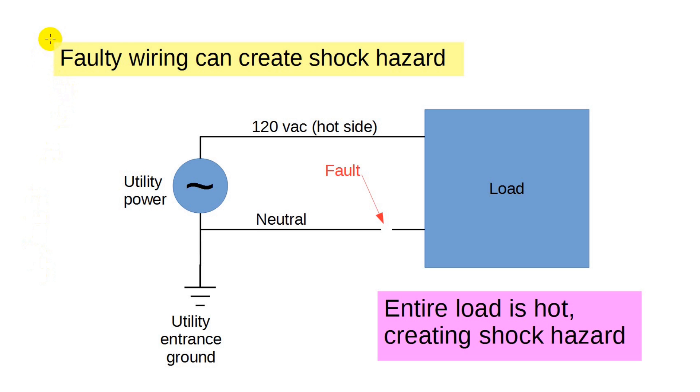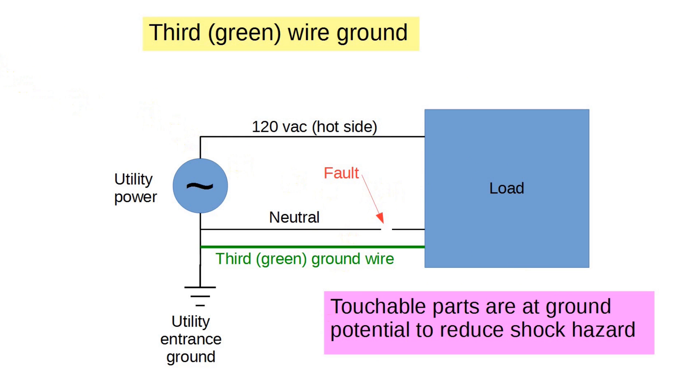Let's look at how a simple wiring fault can lead to issues. If there is a fault, here meaning an open circuit, the entire load assumes 120 volts AC above ground. Touching any part of it that is connected to the line will result in a shock. So, we connect a third wire. This can be connected to parts of the load, such as a drill or a radio, that are touched by users.